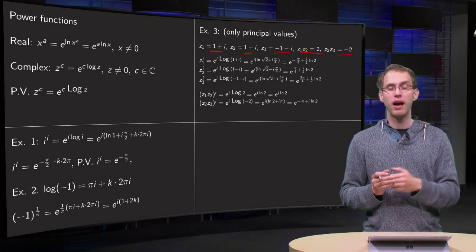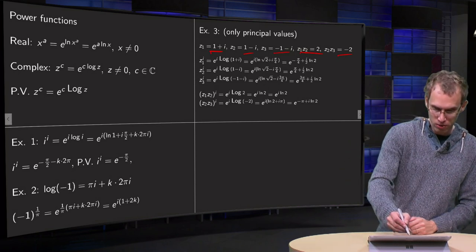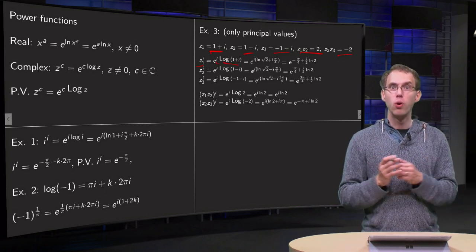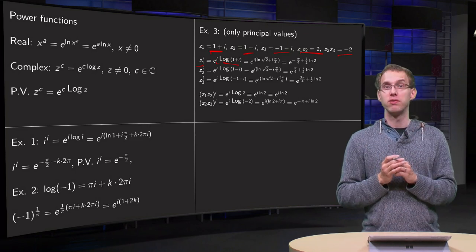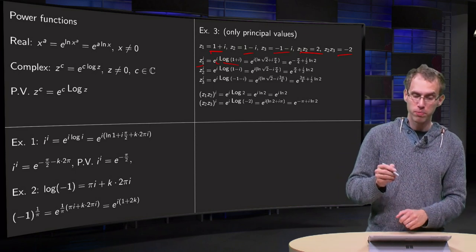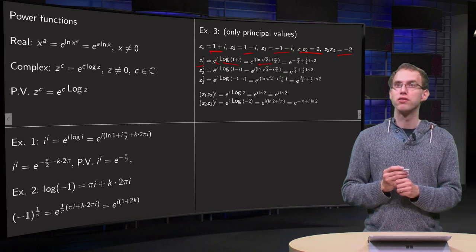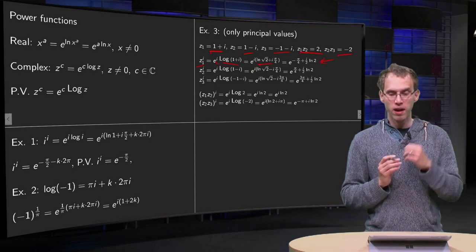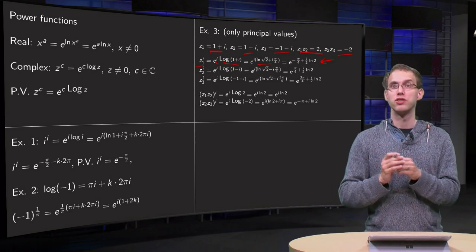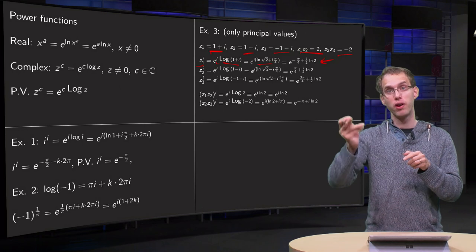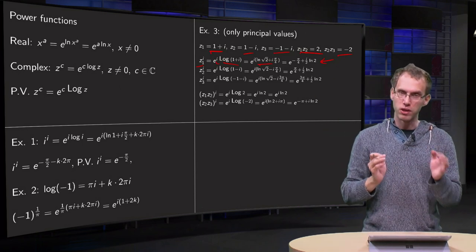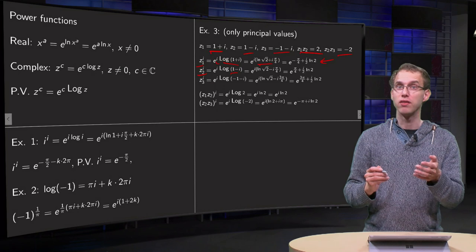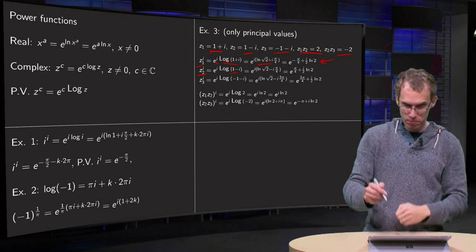We are going to take the i-th power of all of them. Z1 to the power i equals e to the power i times log of (1 plus i). The modulus of 1 plus i equals the square root of 2, and its argument equals π over 4. So we get e to the power i times (ln√2 + i·π/4), which rewrites as e to the power (−π/4 + i/2·ln 2), since ln√2 equals 1/2·ln 2. For z2 to the power i, the argument becomes minus π over 4, so we get e to the power π over 4 times e to the power i/2·ln 2.